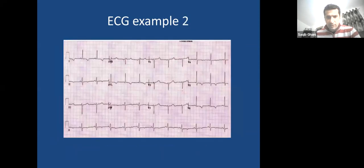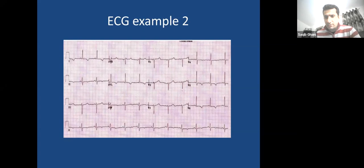This ECG shows T-wave inversions in lateral leads. In the context of chest pain, this can be suggestive of ischemic heart disease. This patient had NSTEMI and later underwent percutaneous coronary intervention.